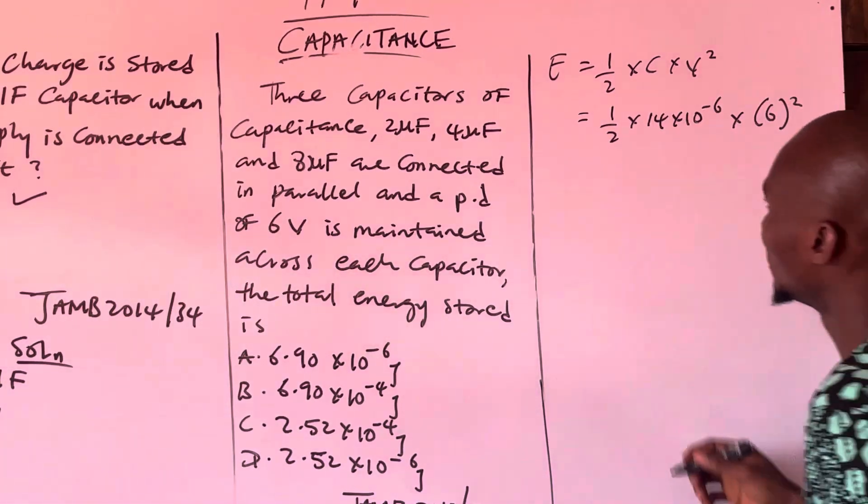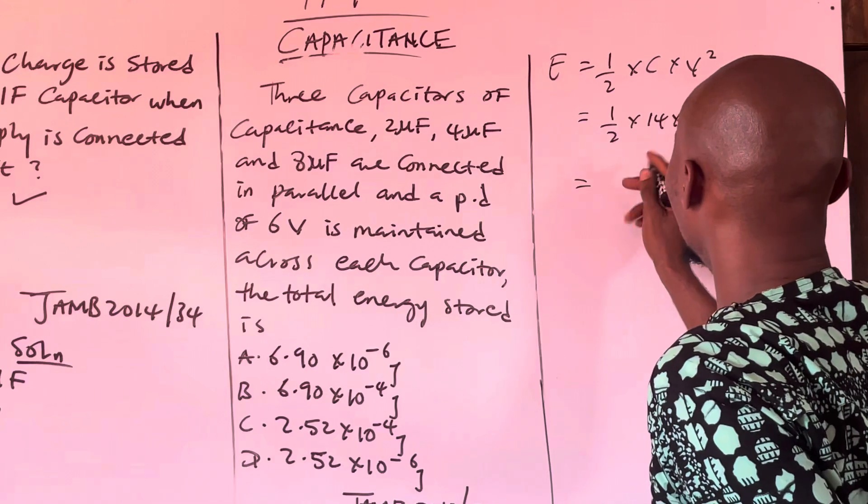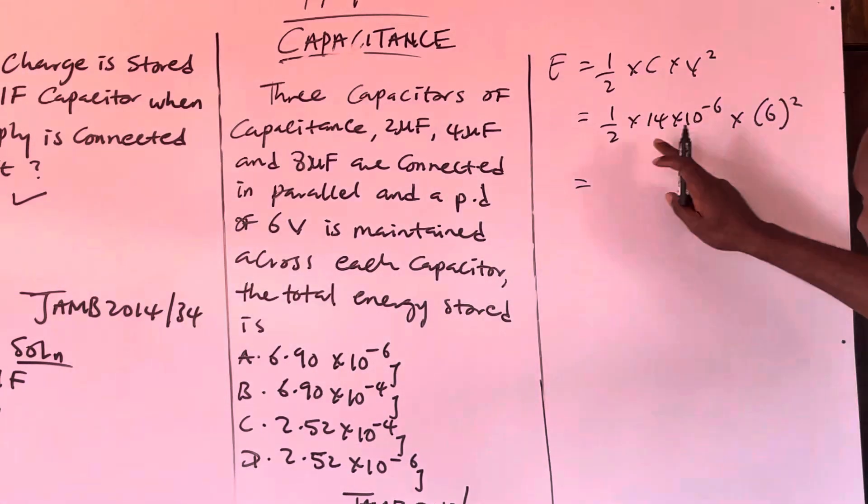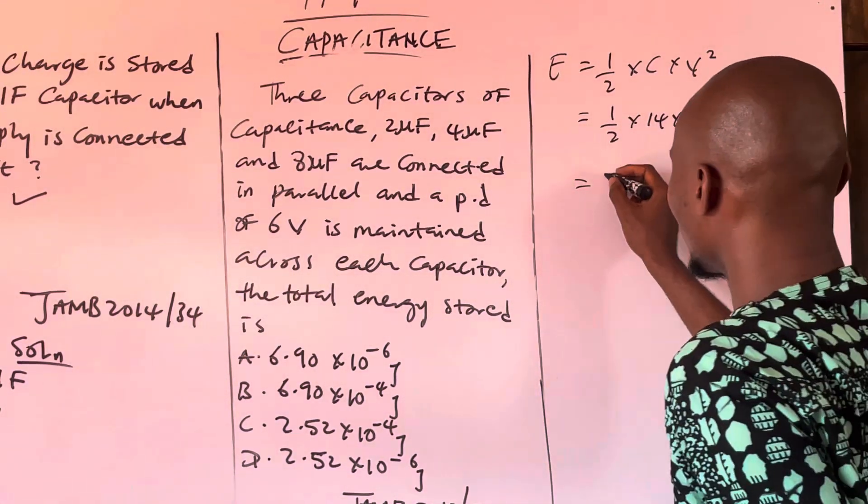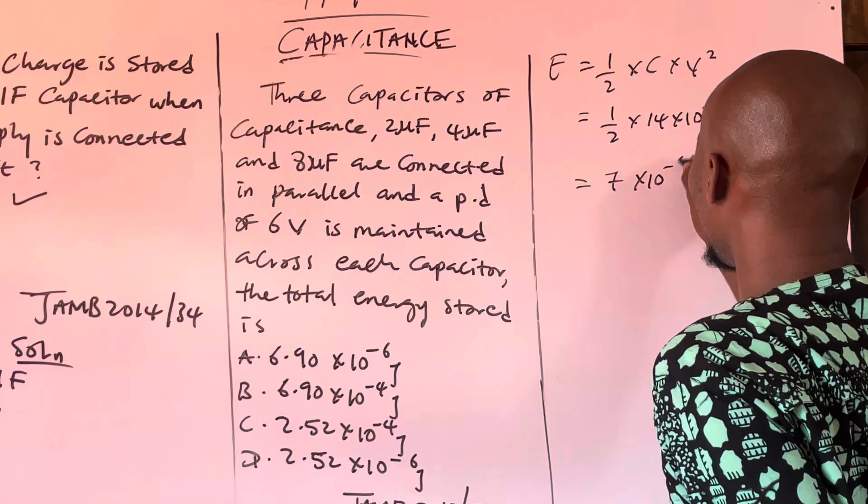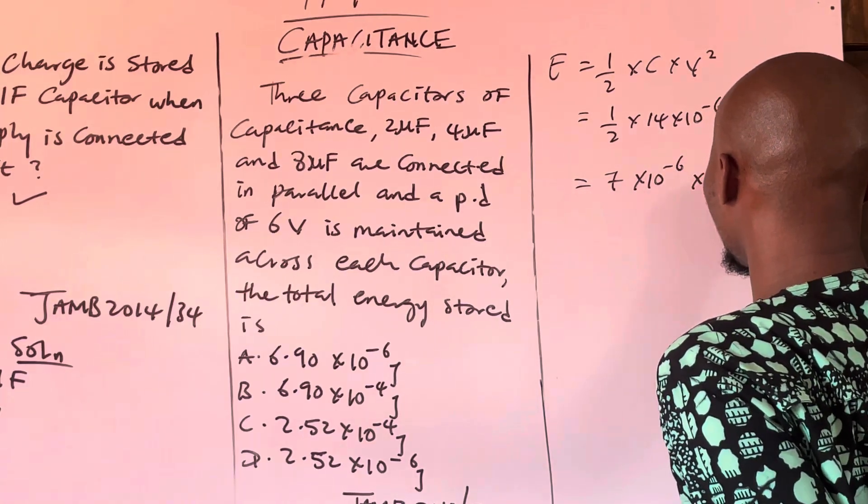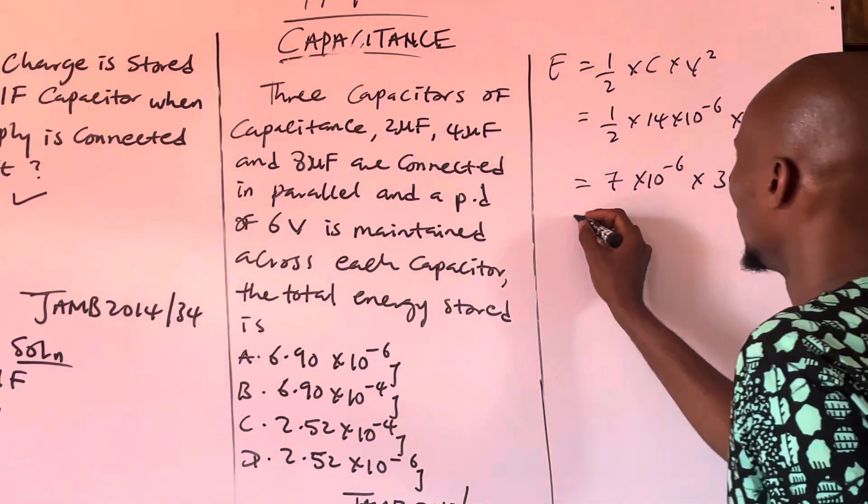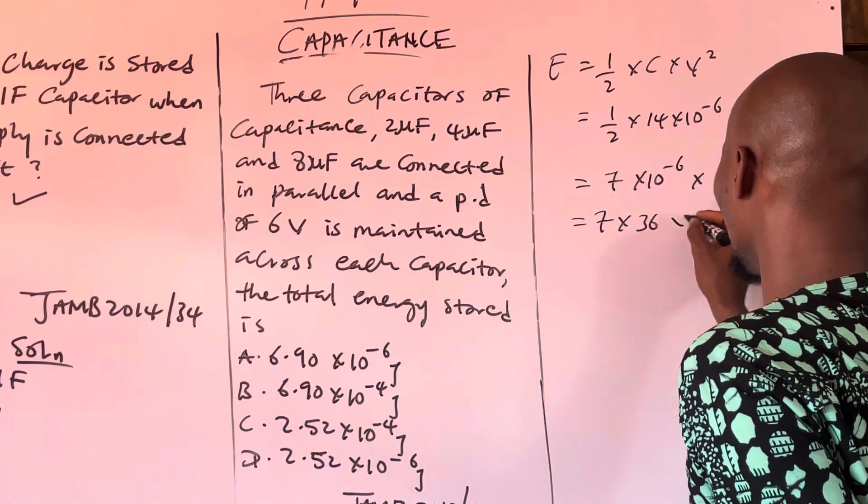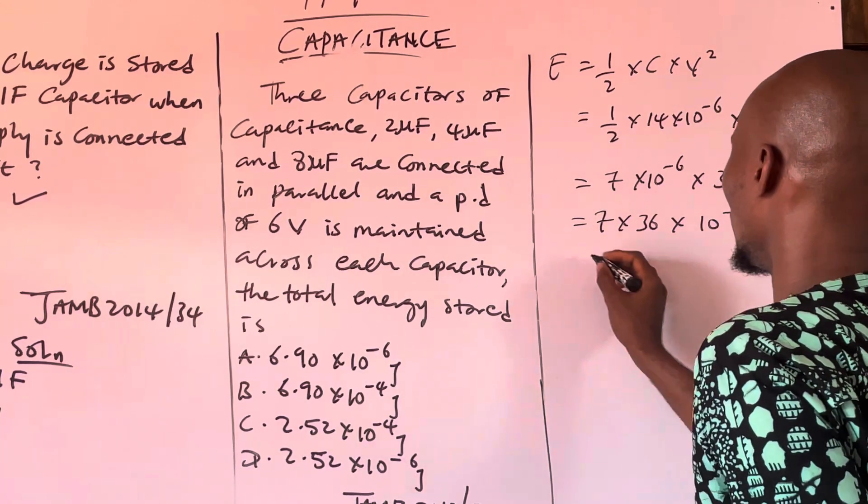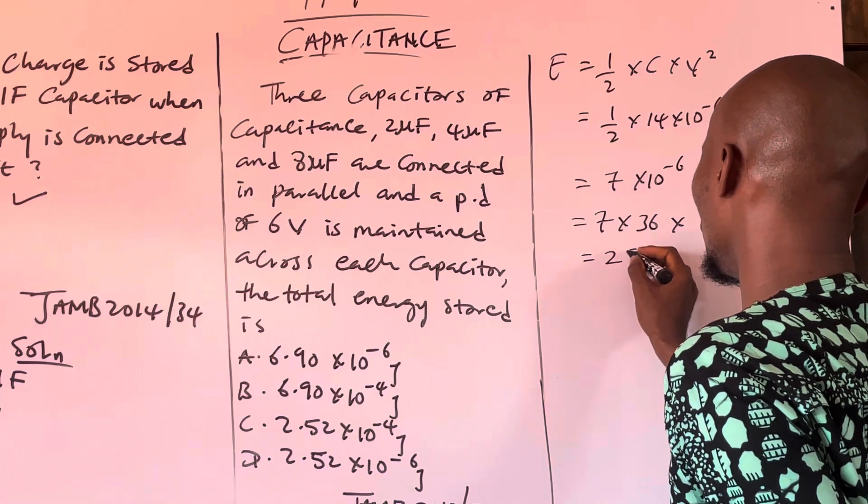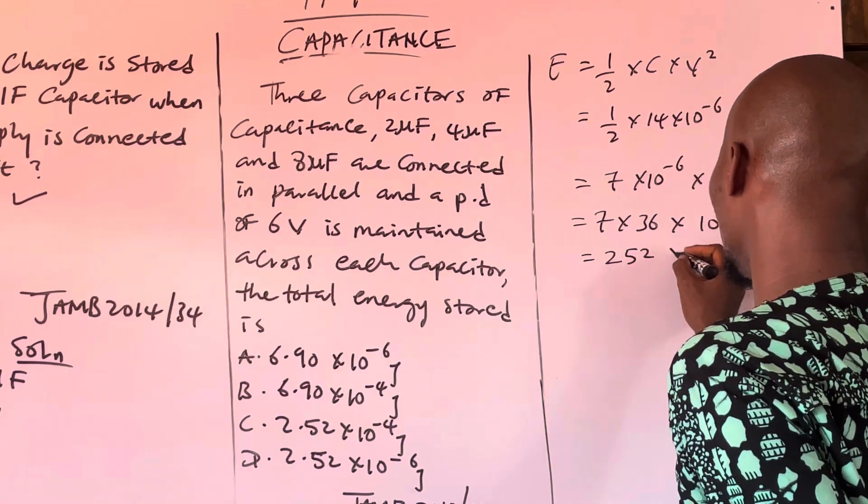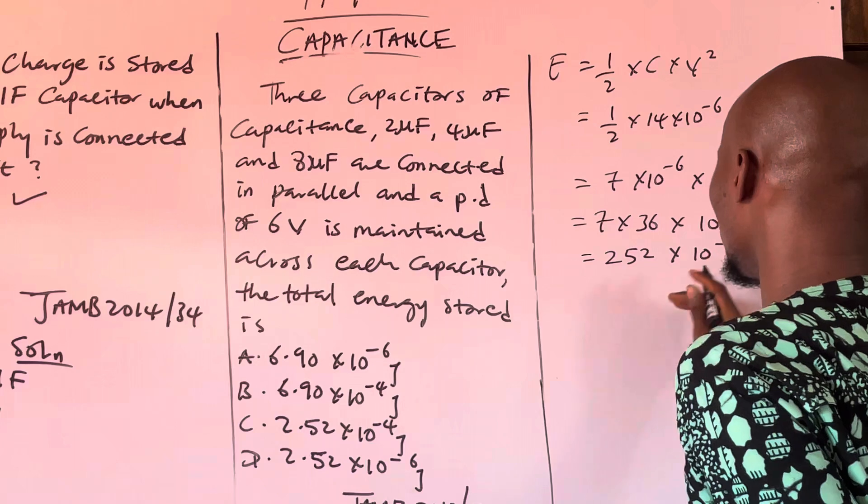So 14 divided by 2 is 7. 7 times 36 equals 252.